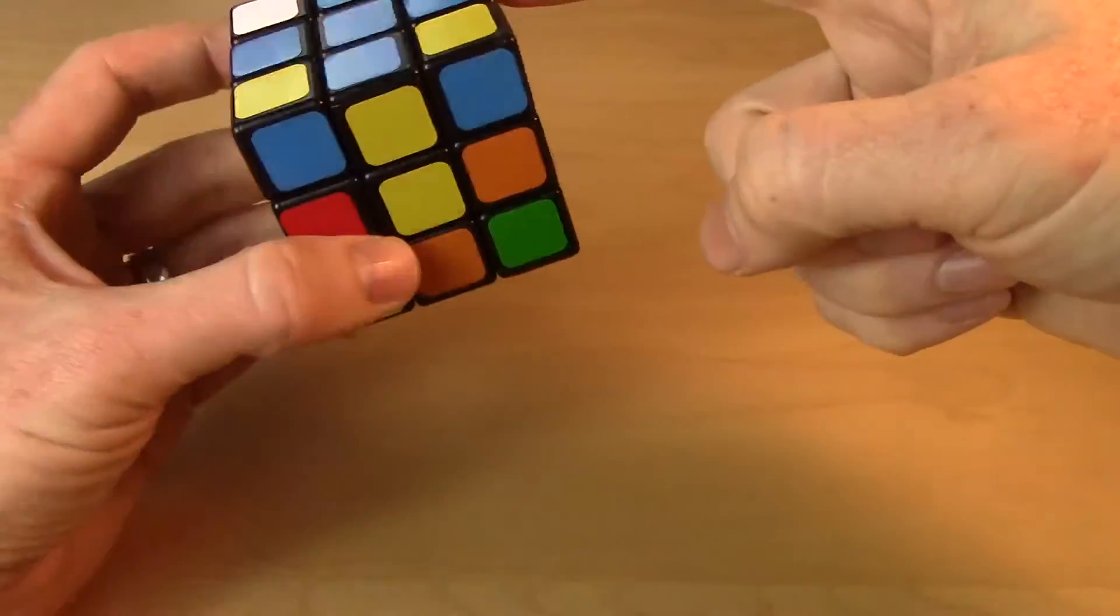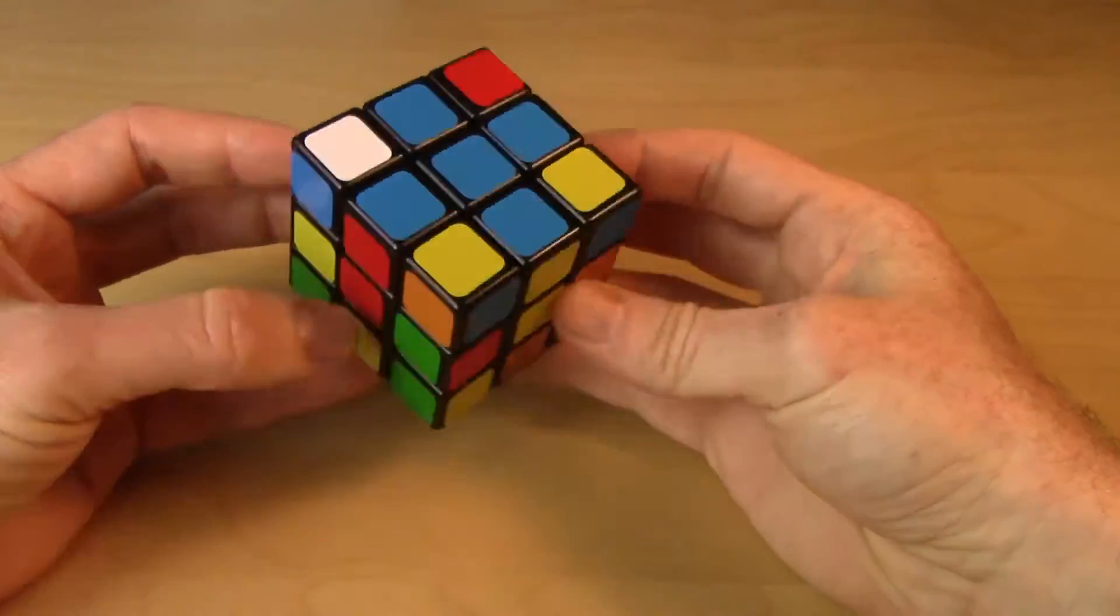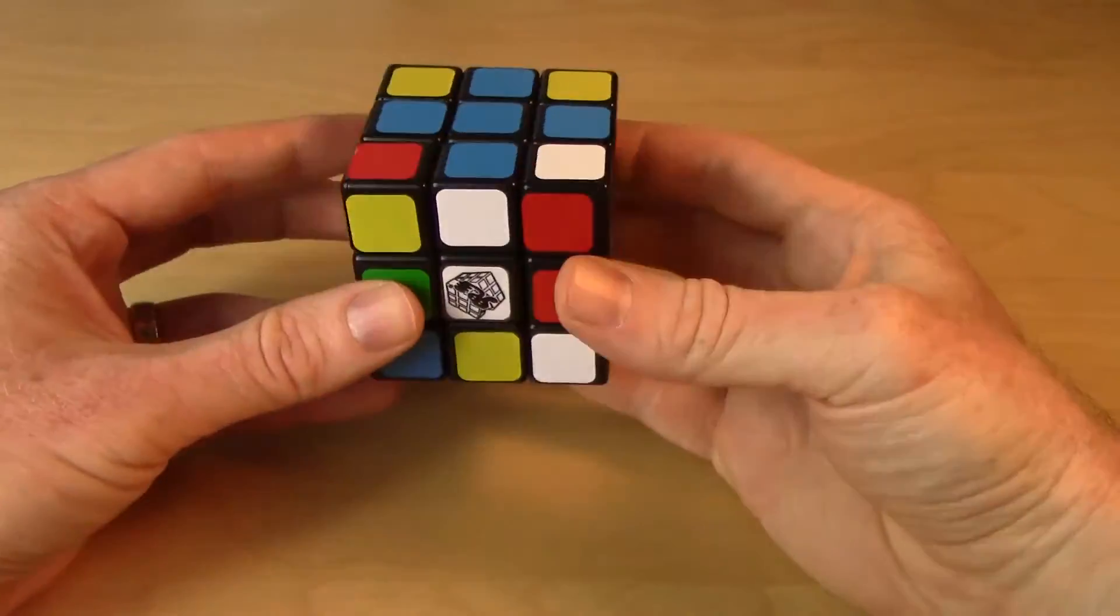So now they're all matched up. We've got that deep cross, that deep blue cross on the top. And so that's it for step one.